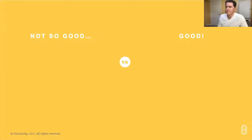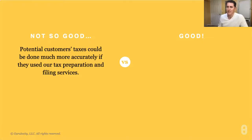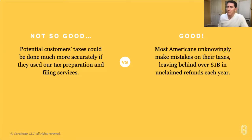Some examples. A not-so-good insight: 'Potential customers' taxes could be done much more accurately if they used our tax preparation and filing services.' This is an example of the trap — they don't have our product or service and therefore that's treated as the insight or the problem. Instead, a better example would be: 'Most Americans unknowingly make mistakes on their taxes, leaving behind over a billion dollars in unclaimed refunds each year.' The fact that Americans are unknowingly making mistakes resulting in lost money they don't even know about — that would be a relevant, much better insight.